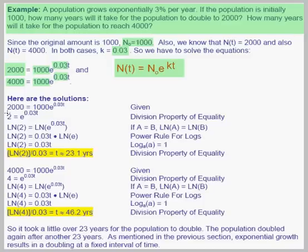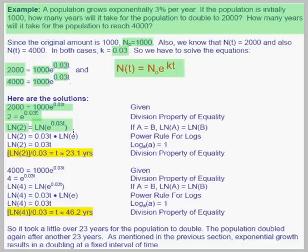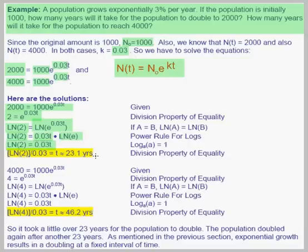To solve, we get the exponential by itself. In the first case we divide both sides by 1,000 and get the simplified equation 2 equals e to the .03t power. We take the natural log of both sides and get ln of 2 equals ln of e to the .03t power. The power rule for logs lets us move the .03t exponent out in front, and since ln of e equals 1, we get ln of 2 equals .03t. Dividing both sides by .03, we get t equals 23.1 years.